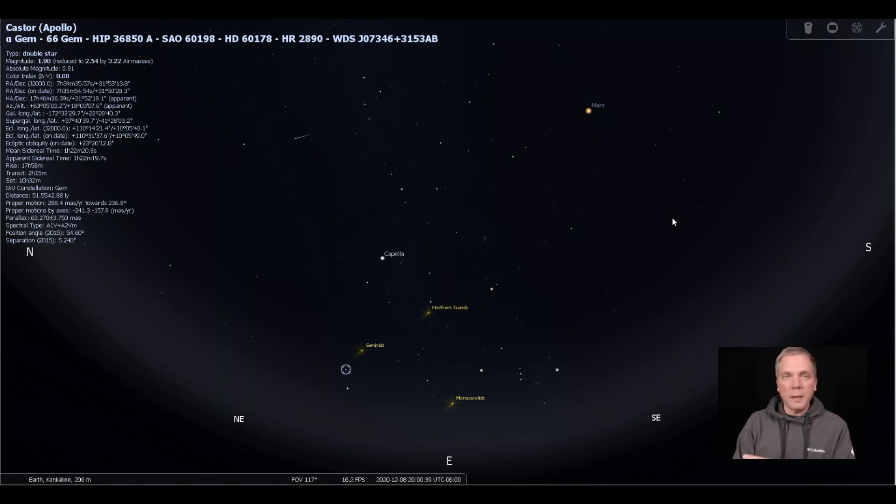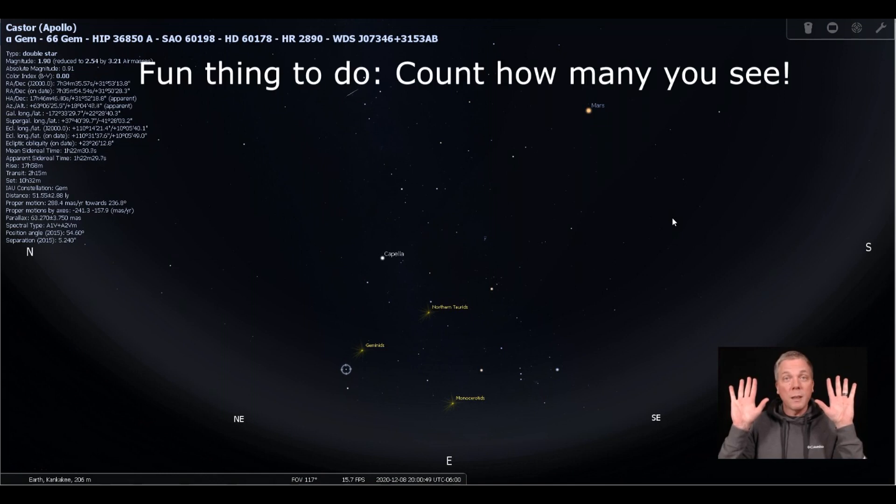We want to start looking on the 13th and then just look up. You don't need any optical aid, you don't need binoculars, you don't need a telescope. If you want to use binoculars you can try to look at some of the trails as they may occur, but mostly you're just trying to see as much of the night sky as you possibly can at once and look for those meteors as they streak across the sky.